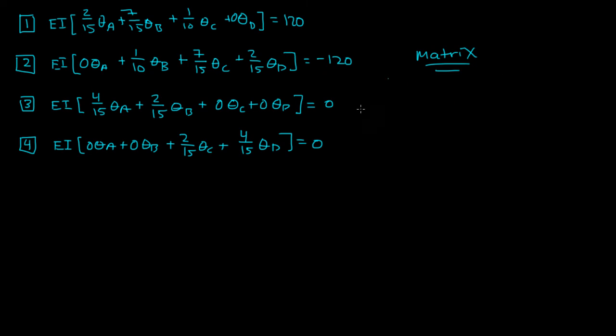I'm actually going to put this in matrix form. So I'm going to have matrix A, and then you have your unknowns, and then those are equal to your values here, 120, negative 120, 0, and 0. And so if I factored out an EI, right, the EI is factored out of everything. And if I wrote this matrix, you'd take the coefficients of equation 1.